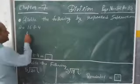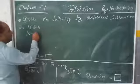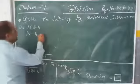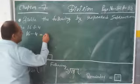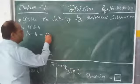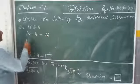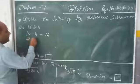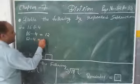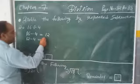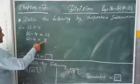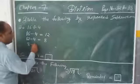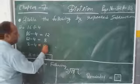First we will subtract 4 from 16, then we get 12. And then we will subtract 4 from 12, then we get 8. And then we will subtract 4 from 8, then we get 4.